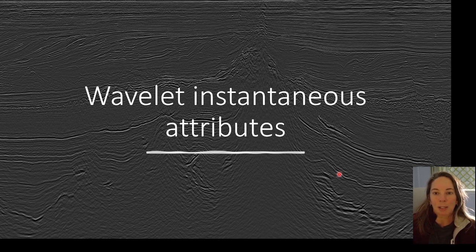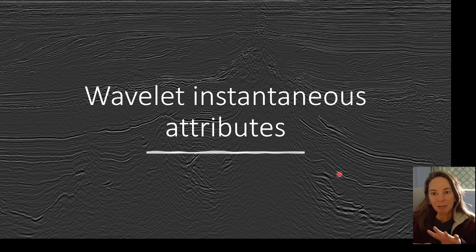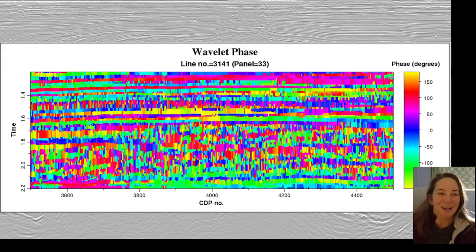So those would be like the envelope peaks and troughs. So instead of calculating attributes at every sample point, these attributes are computed more on an envelope level.